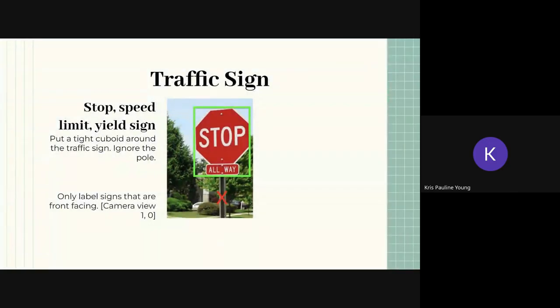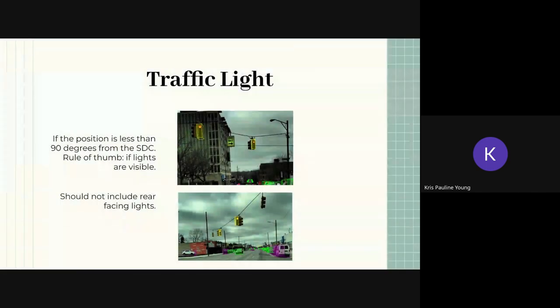Traffic signs are also something that we have to add, so don't mistake these for temporary signs which are under the road obstacle. These are the more permanent ones, so stop, speed limit, and yield signs fall under our traffic sign label. Only annotate the sign itself, no need to annotate the pole that it comes with. Only annotate traffic signs that are in front-facing camera views, so if you notice traffic signs in the side of your STC or in rear cameras, you don't need to annotate them.